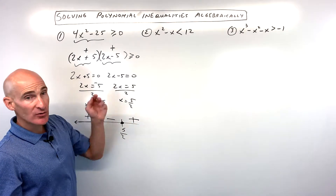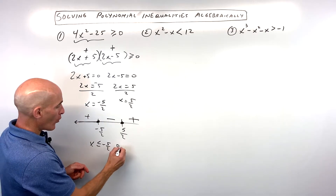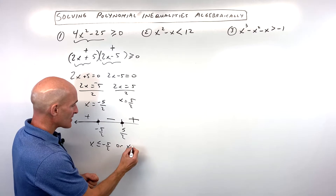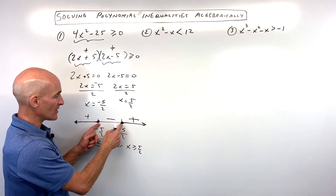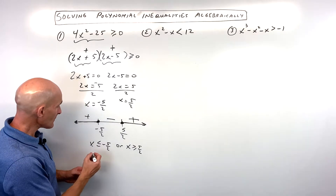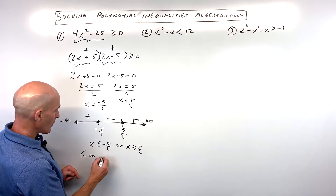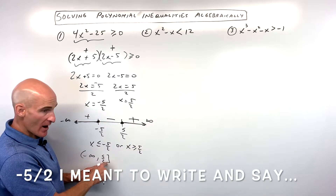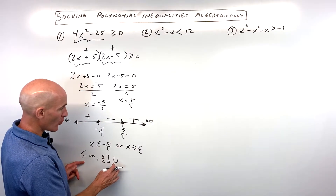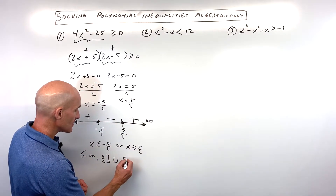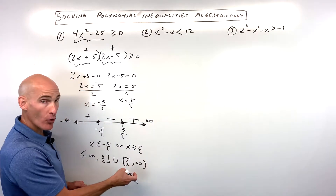Now we can see we want to know where it's greater than or equal to zero. It's going to be when x is less than or equal to negative 5/2, or — in math, 'or' means union — x is greater than or equal to 5/2. In interval notation, we're starting at negative infinity all the way to negative 5/2, including negative 5/2 with a square bracket. You can't reach infinity, so that's a parenthesis. Union — that's like 'or' — then from 5/2, including 5/2 with a square bracket, all the way to positive infinity with a parenthesis.